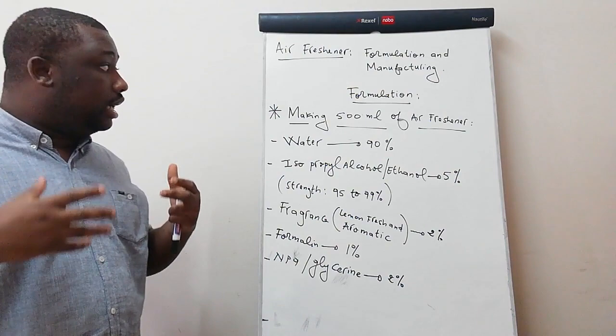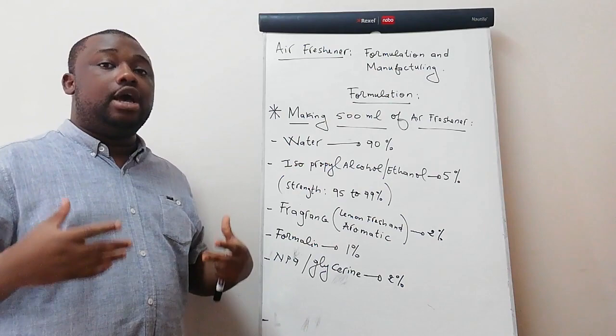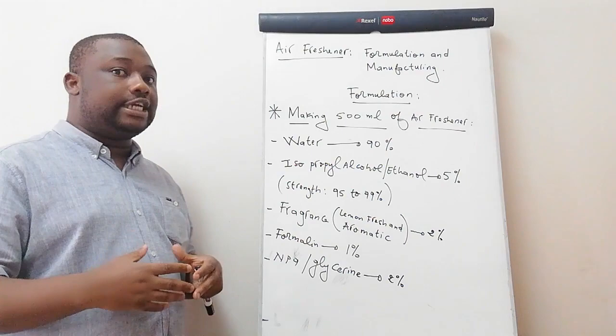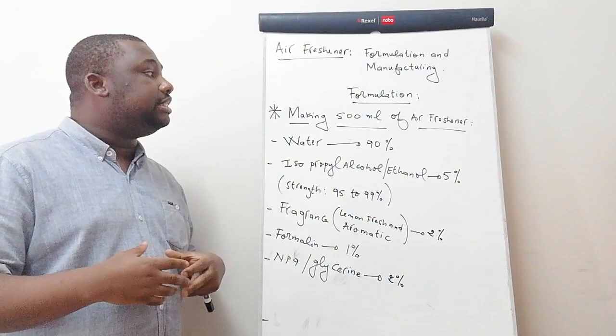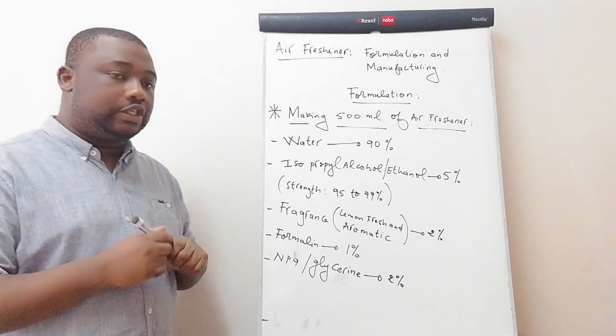During this manufacturing process we're going to manufacture 500 mils of air freshener. The first ingredient is water — water should be 90% of the total volume. How much is 90% of 500 mils? It's 450 mils. So we need to consider 450 mils of water.